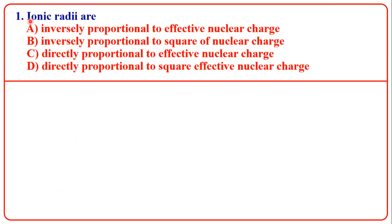First question: ionic radii are — first option: inversely proportional to effective nuclear charge; second option: inversely proportional to the square of nuclear charge; third option: directly proportional to effective nuclear charge; fourth option: directly proportional to the square of effective nuclear charge. Already we know ionic radii are inversely proportional to effective nuclear charge. So, answer A.